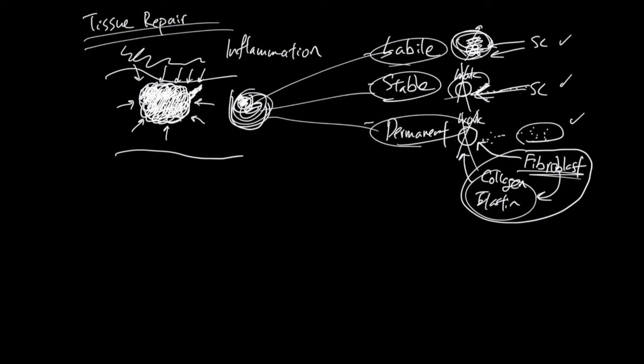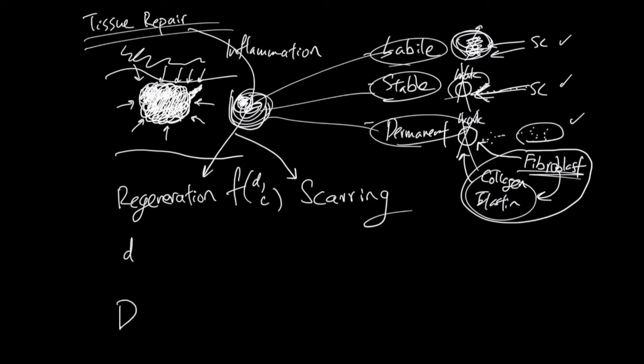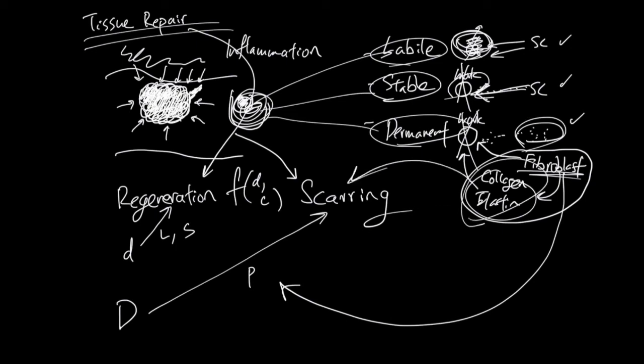Now let's talk about the difference between regeneration and scar formation. So tissue repair can go to regeneration or scarring. And it's a function of two things, the damage and also the cell type. So the damage can be small or damage can be big. Big damage leads to scarring. Small damage can be regenerated if the cell types are labile cell or stable cell or permanent cell. There's no stem cells that can regenerate them. So fibroblasts will come in and secrete collagen, elastin, and a bunch of stuff. And this process makes the scarring tissue.